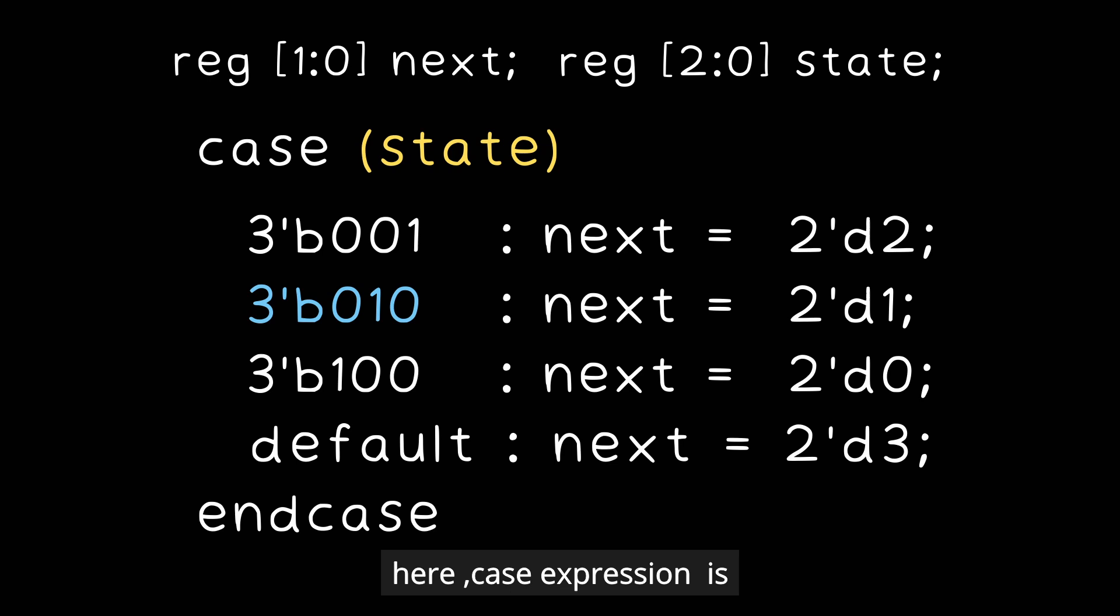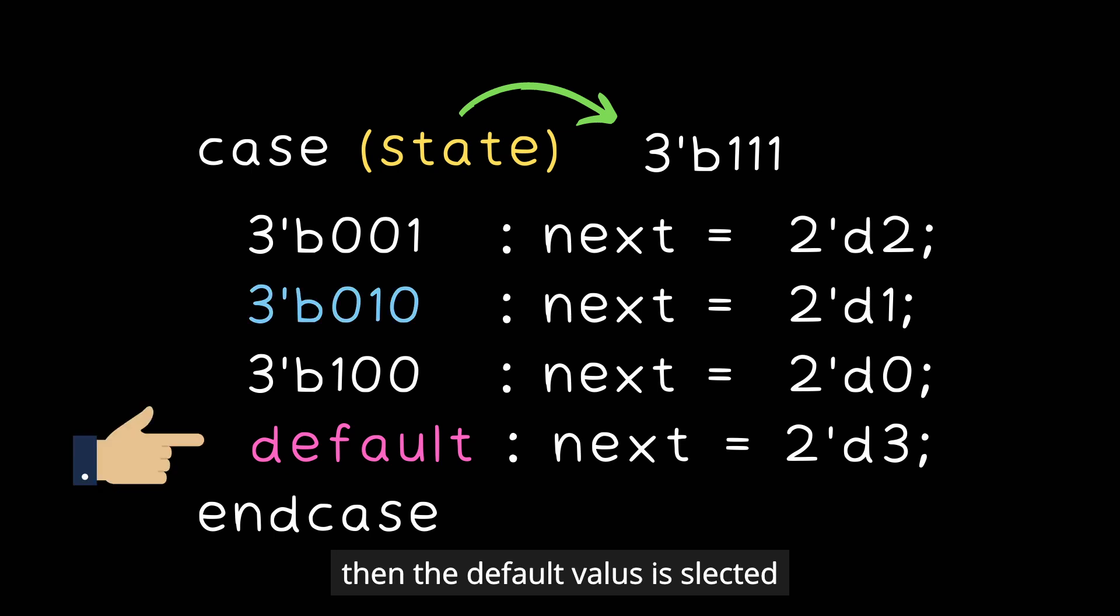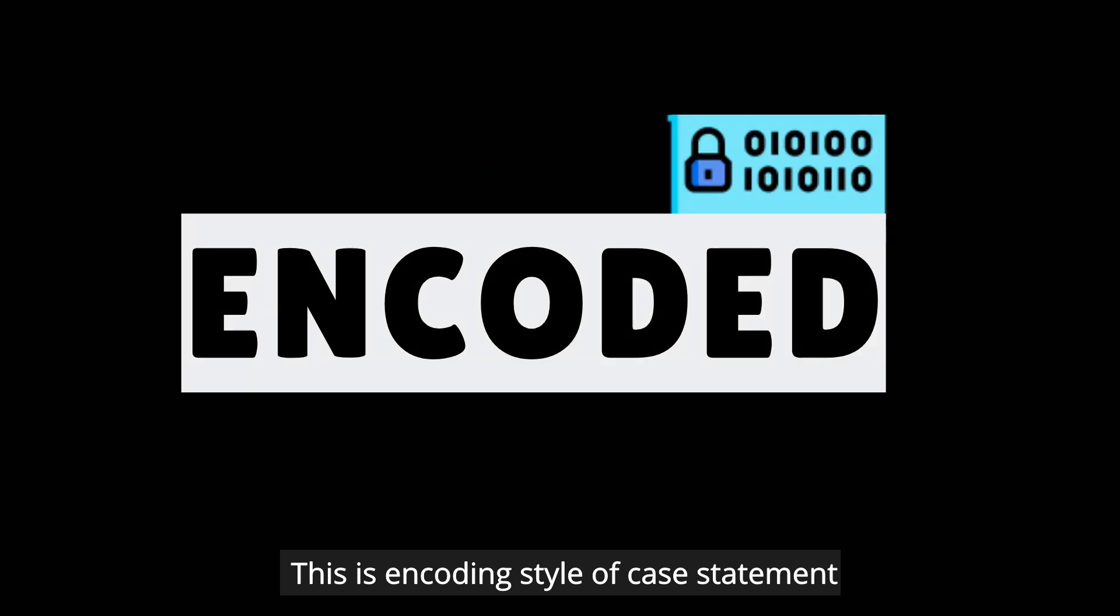Here the case expression is a state variable which is a 3-bit vector. The state value is compared with each case item. If state value is 3'b010 then the next value will be 1. If state value is 3'b111 which is not there in the case item, then the default value is selected and the output next will be 3. This is encoding style of case statement.